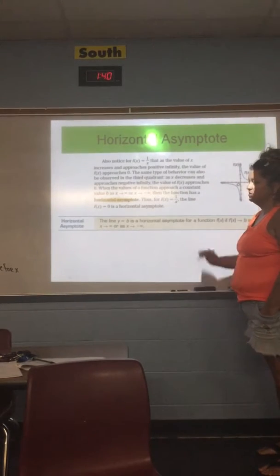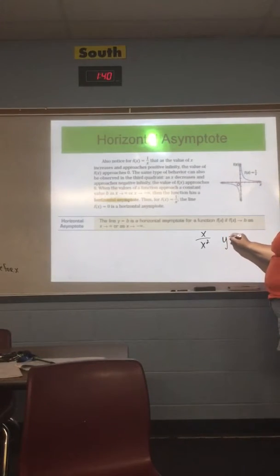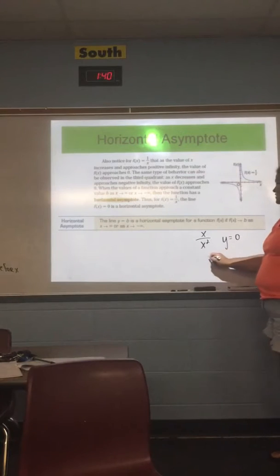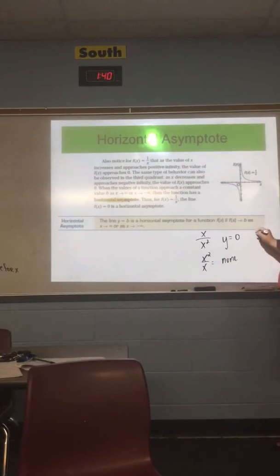Okay, good. So like in Algebra 2, what we learned was is if it was bottom heavy, meaning it looked like this, the horizontal asymptote was going to be Y equals zero. We learned that if it was top heavy, it was going to be none. And if they were exactly the same, does anybody remember what we did? Good, we took the coefficients, whatever we're here, and it was Y equals that. That's going to kind of hold true.